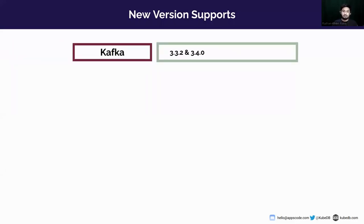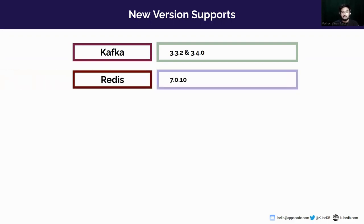Let's look at the new version supports in this release. We are providing support for Kafka versions 3.2.2 and 3.4.0. In an earlier release of KUBEDB, we added support for Kafka 3.2.0, but Kafka's documentation now recommends using 3.2.2. We have also added support for Redis version 7.0.10.